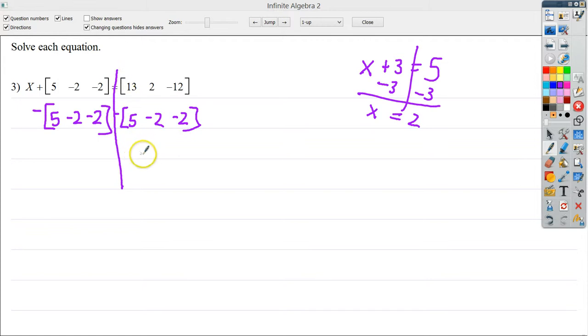So 13 minus 5 is of course 8. 2 minus negative 2, so that would be 2 plus 2 is 4. Negative 12 minus negative 2, or negative 12 plus 2, so you end up with negative 10. And that is the resulting matrix that you would get.